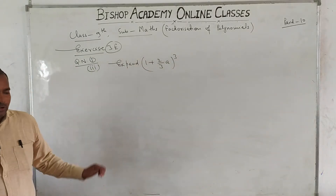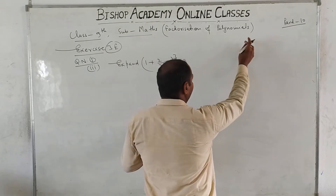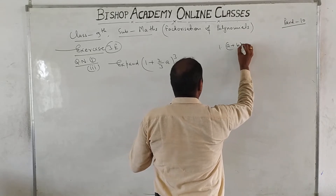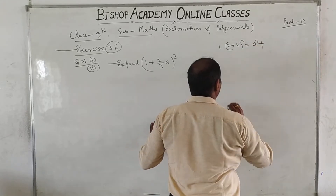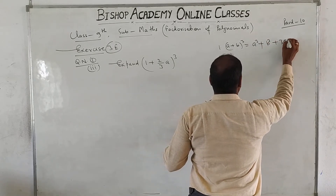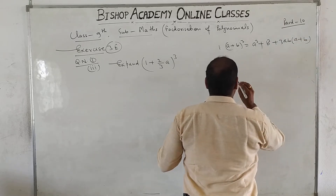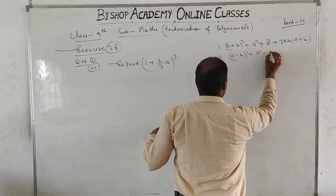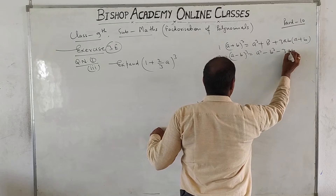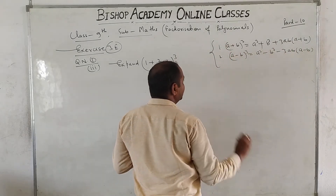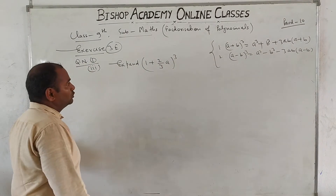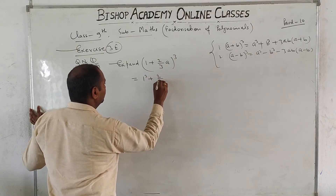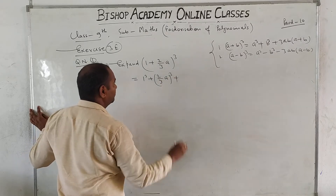In the previous class, we have two identities. First: a plus b whole cube equals a cube plus b cube plus 3ab(a plus b). Second: a minus b whole cube equals a cube minus b cube minus 3ab(a minus b). This is the a plus b whole cube form. So we break it: a cube, that is 1 cube, plus 2/3a whole cube, plus 3ab.